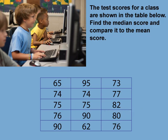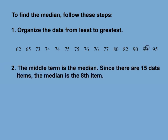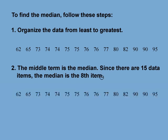Here's how to find the median. First, organize the data in order from left to right. Here you see all the test scores arranged from least to greatest. The next step is to find the middle term — the middle term is the median. Since there are 15 data items, the median is the eighth term.